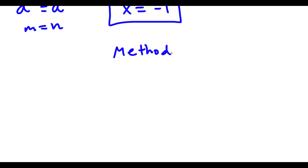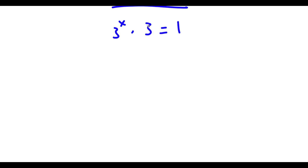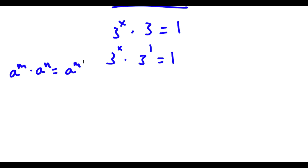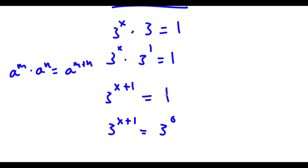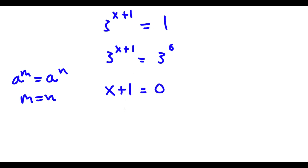For method 2, we again start with 3 to the power of x times 3 is equal to 1. This time, instead of dividing 3 on both sides, I'm actually going to multiply 3 with 3 to the power of x. So 3 here is the same thing as 3 to the power of 1. And if I have a to the power of m times a to the power of n, this is the same thing as a to the power of m plus n. So 3 to the power of x times 3 to the power of 1 equals 3 to the power of x plus 1, which is equal to 1. Now, 1 we can rewrite as 3 to the power of 0, because anything to the power of 0 is equal to 1. So if a to the power of m equals a to the power of n, then m equals n. So x plus 1 is equal to 0. To solve this, all I have to do is subtract 1 on both sides, and I get x is equal to negative 1.